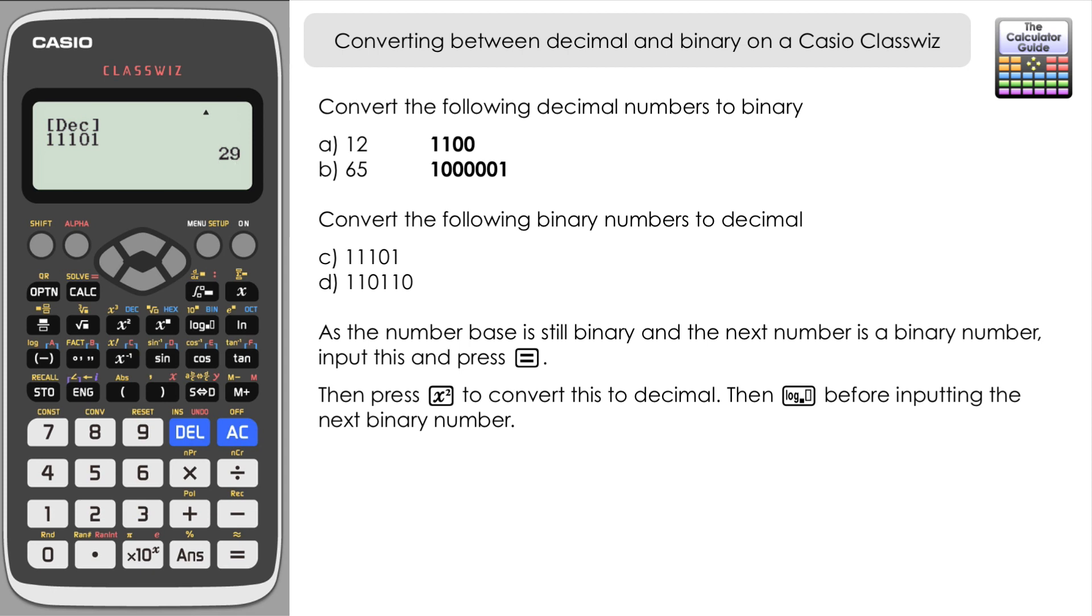Let's try that one more time with the last figure. Press binary again because we're going to do a binary input, and it's 110110. Press equals and then decimal to convert, and we can see that in decimal, that is 54.